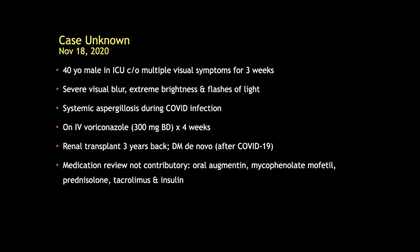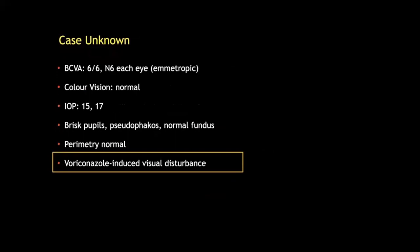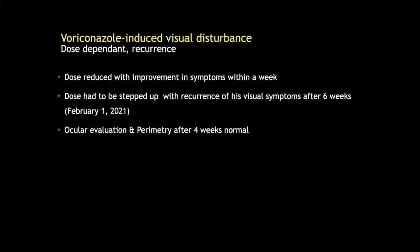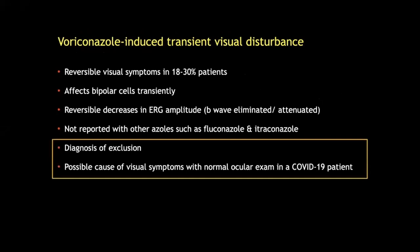In November last year we had a 40-year-old male complaining of multiple visual symptoms for three weeks. He was on IV voriconazole for management of systemic aspergillosis contracted during his COVID infection. Medication review did not reveal any other medications responsible for the visual symptoms. Ocular evaluation and visual functions were within normal limits. We made a diagnosis of voriconazole-induced visual disturbance. The dose of voriconazole was reduced with improvement of symptoms within a week, however the dose had to be stepped up later with recurrence of visual symptoms. Voriconazole-induced visual symptoms should be an important diagnosis in COVID patients, especially when symptoms are associated with normal ocular evaluation.